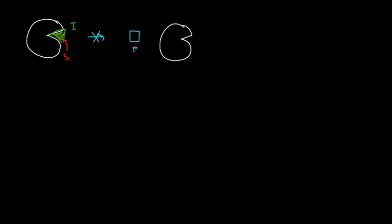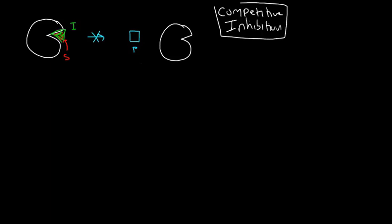Drugs are a really good example of what are known as enzyme inhibitors. They work because they interact with the enzyme in a way that prevents the substrate from being converted to a product. This collectively is known as enzyme inhibition. And if this inhibitor binds to the same spot as the substrate — the active site — this is specifically called competitive inhibition.